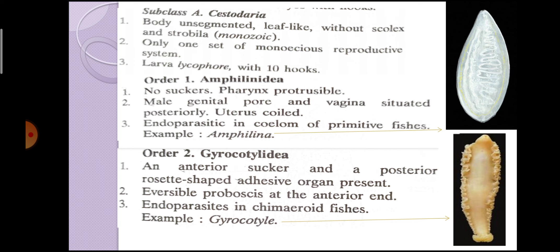The first subclass of Cestoda is Subclass Cestodaria. In this, the body is unsegmented — without scolex and strobila. Only one set of monoecious reproductive system is present. The larva is a lycophore with 10 hooks.